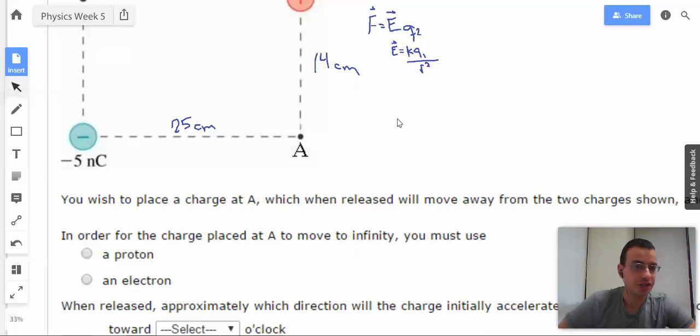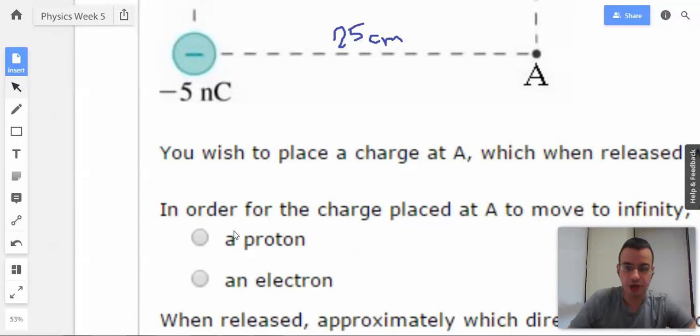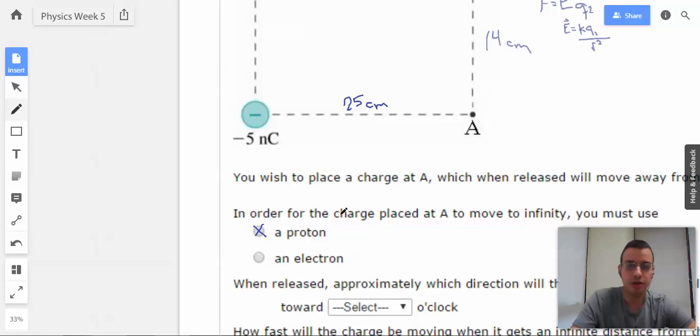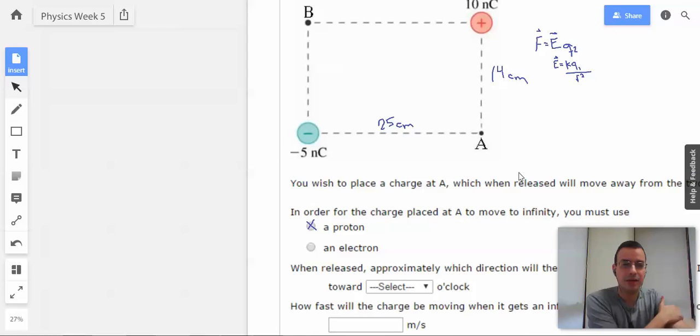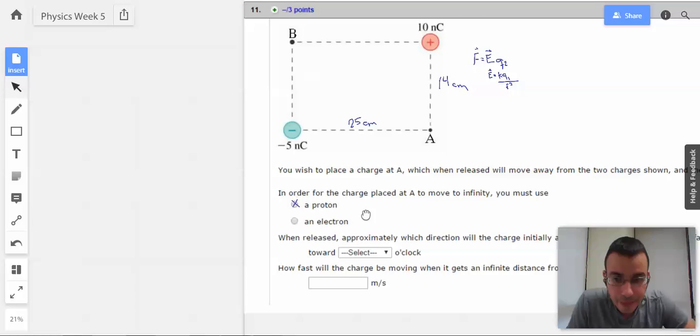Now if we wanted to be more exact and figure out precisely, then we could do the calculations. But it's not necessary here. Since we know that 10 is both stronger and closer, it will have the most influence, so we use a proton.